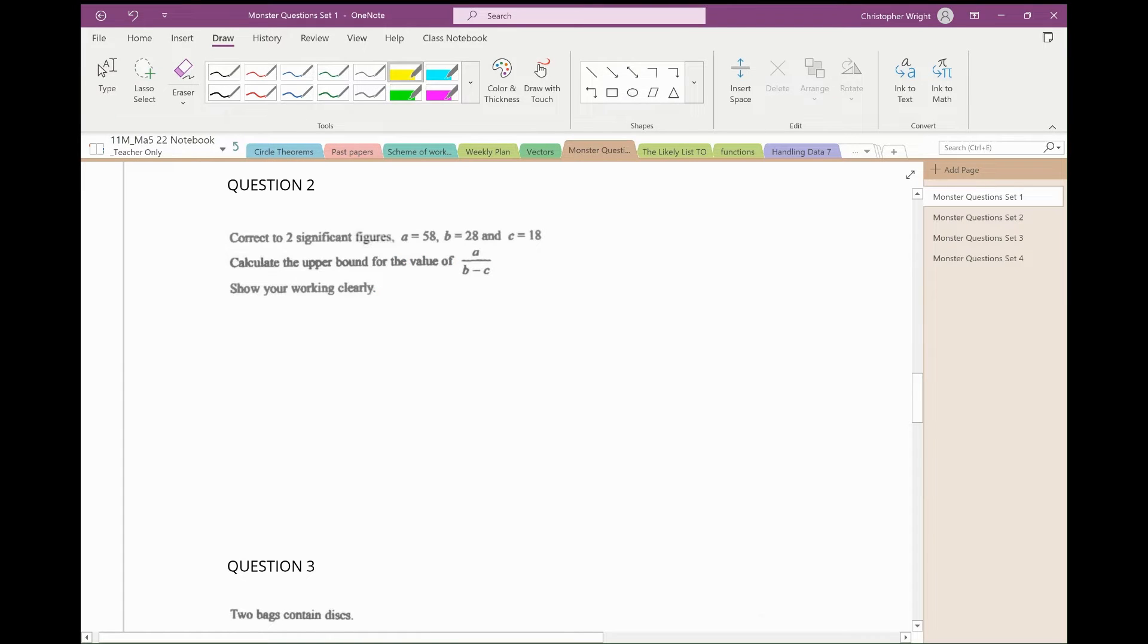Correct to two significant figures, A, B and C have these values. Calculate the upper bound. Let's first of all start by writing the upper and lower bounds of A, B and C. A has bounds 4.5 and 5.5. The bounds for B are 27.5 and 28.5. Bounds for C are 17.5 and 18.5.